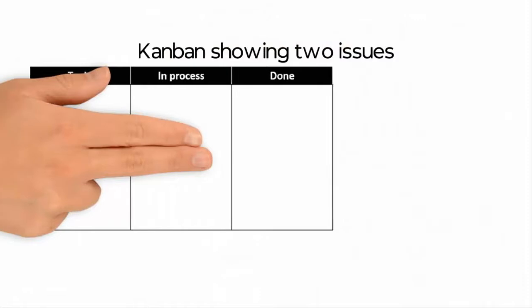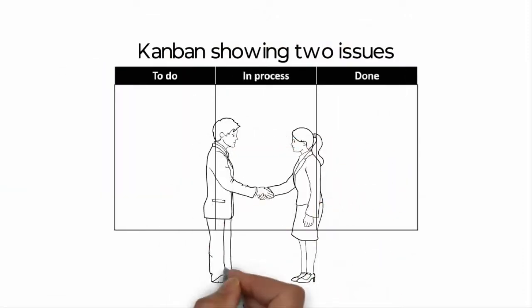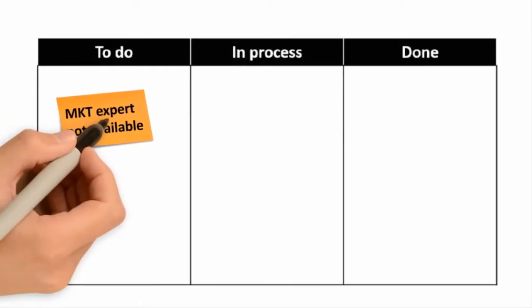Here is a Kanban board showing two issues for a project team, which is in a 15-minute stand-up meeting trying to quickly address these issues. First, the marketing expert isn't available as expected. What to do?